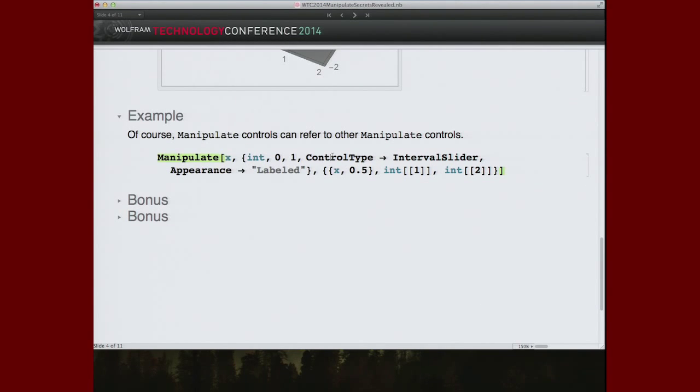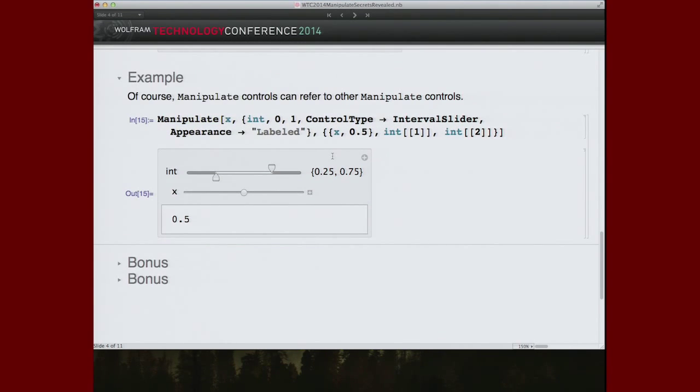It can also affect other manipulate controls. Here's a very simple example, an academic example of an interval control whose value sets the domain for some other control. This interval control sets the domain for the X slider. If we change, right now, X is going between about 0.3 and about 0.7. We can change that so that we want X only to be in a very small range around 0.8. We have the usual sort of self-referential kinds of things that you might get in other sites of controls. We have that with interval slider as well.